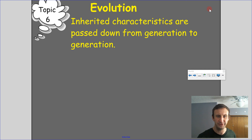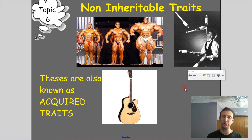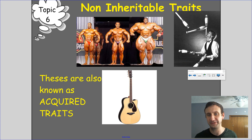Evolution is that inherited characteristics favorable to an organism are passed down from generation to generation, and because of natural selection, non-favorable traits are not passed on. A quick review of acquired versus non-inheritable traits: acquired traits are things you are not born with — not in your genetic code — but things that happen over your lifetime. For example, this bodybuilder was not born this way; he's been taking some stuff to get that large.